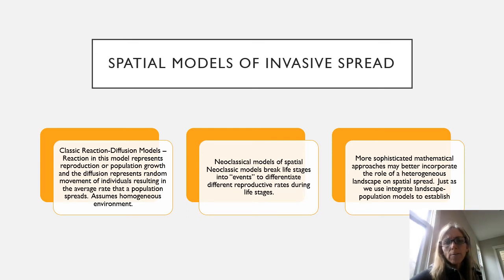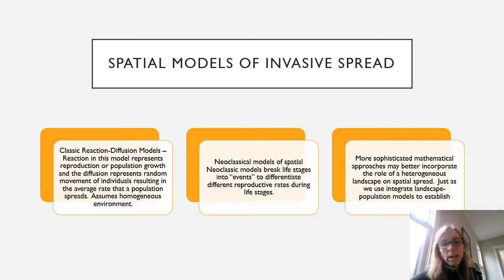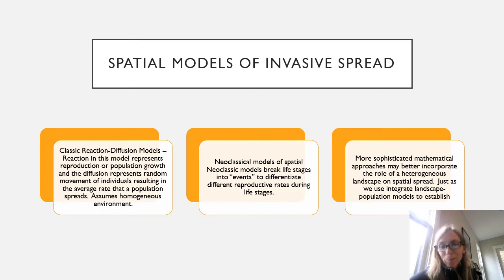The neoclassic model of spatial spread built off that reaction-diffusion model, but in this case considers that reproductive success is often stage or age dependent. Neoclassic models break life stages into different events and differentiate reproductive rates during different life stages. This modeling has moved into more sophisticated mathematical approaches better able to incorporate heterogeneous landscapes and spatial spread, similar to how we integrate landscape population models.